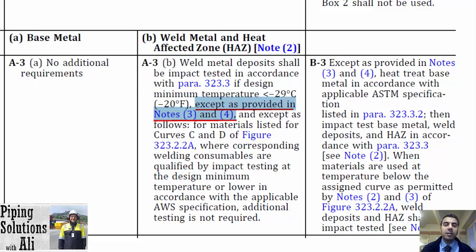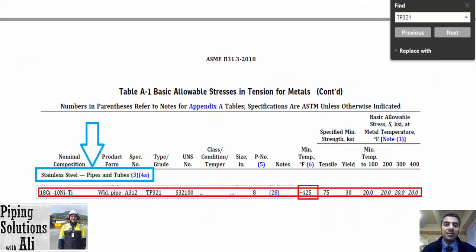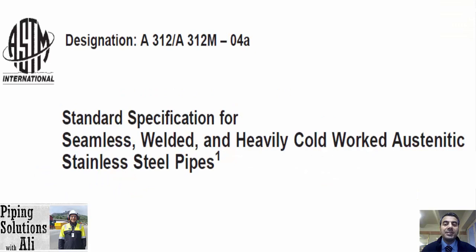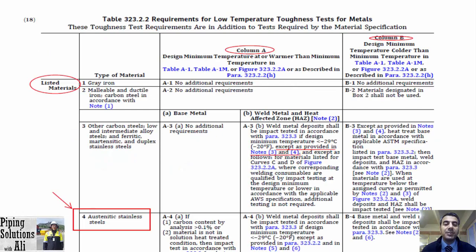By another example, the purpose of this episode will be fulfilled. The minimum temperature of ASTM A312 grade TP321, categorized as stainless steel pipes and tubes in table A1, is minus 425 degrees Fahrenheit. This material is described in ASTM as a standard specification for seamless, welded, and heavily cold-worked austenitic stainless steel pipes.